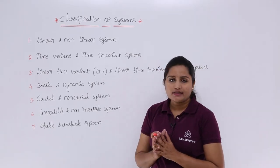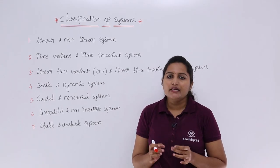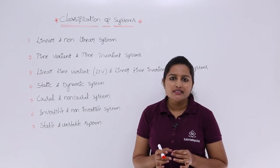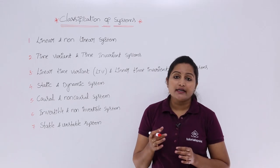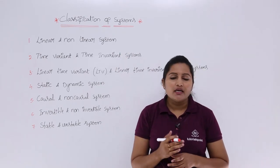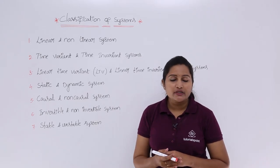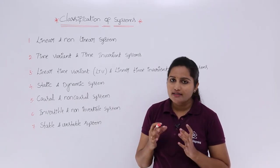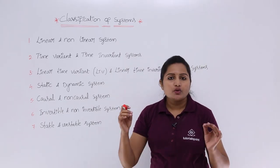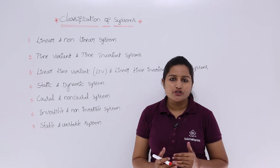For a linear and non-linear system, if a system's characteristics satisfy the superposition principle and linearity, then that is said to be a linear system. If it is not satisfying the superposition principle then that is said to be a non-linear system. So linearity or non-linearity depends upon the superposition theorem.